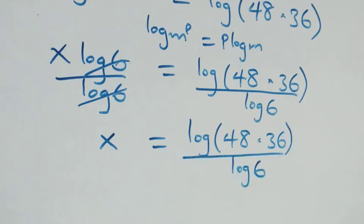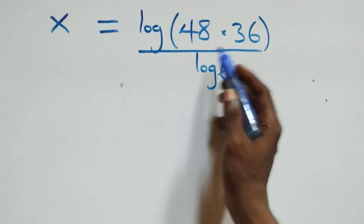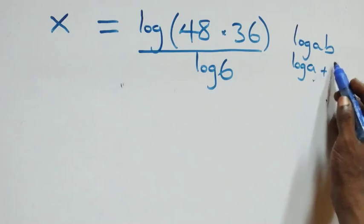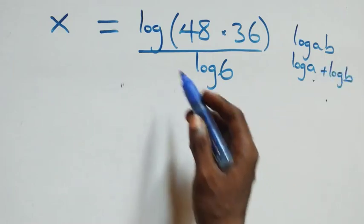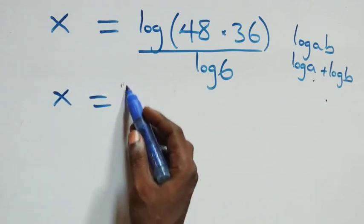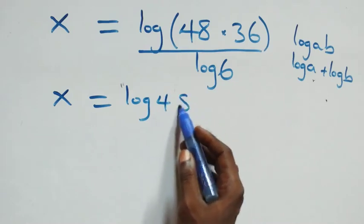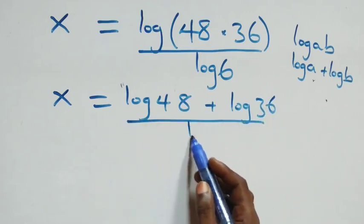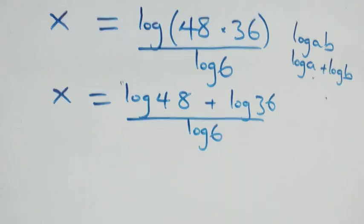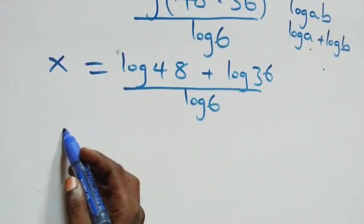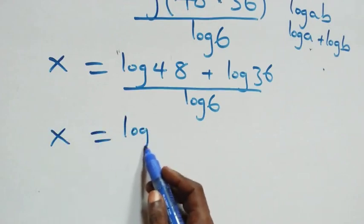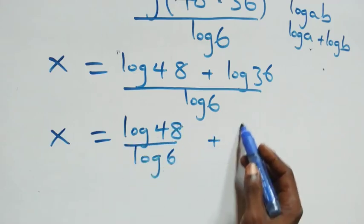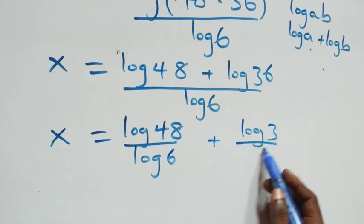This follows from the law of logarithms: log of a times b is the same as log a plus log b. So what we have becomes x equals log forty-eight plus log thirty-six over log six. We then separate this into two fractions: x equals log forty-eight over log six plus log thirty-six over log six.